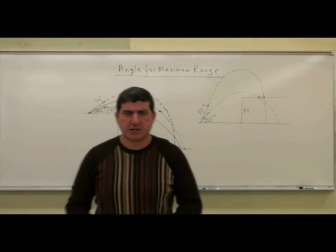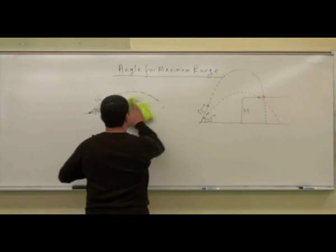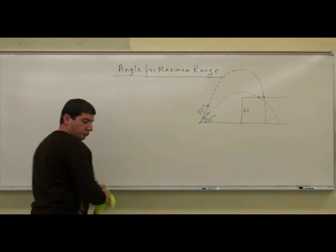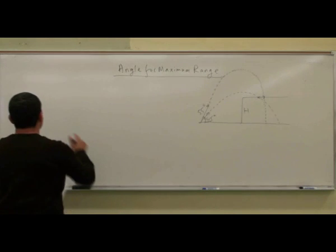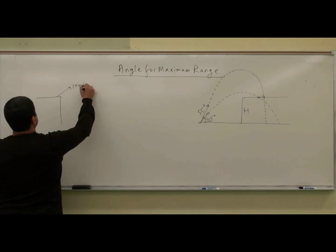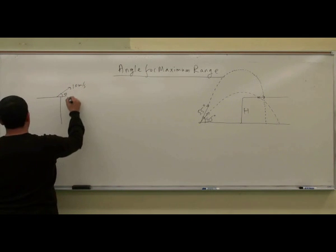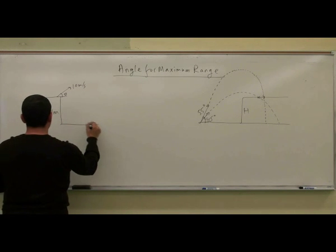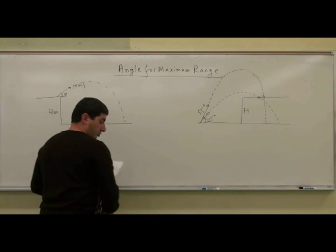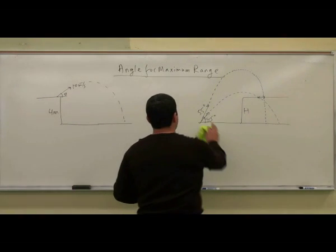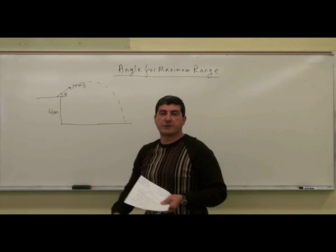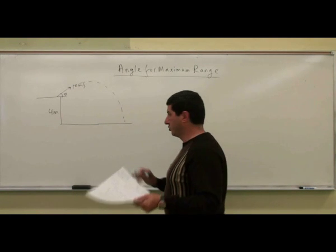So let's prove what the angle for maximum range is for this situation. We'll give some random numbers. Let's do the first case: you're shooting at 10 meters per second at an angle theta, and the height is 4 meters. So what is the angle for maximum range? We'll assume that air friction is ignorable.